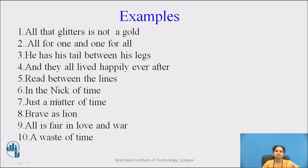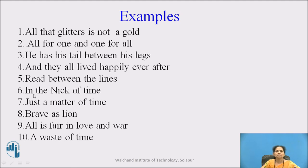Here are some examples of glitches: 'All that glitters is not gold.' 'All for one and one for all.' 'He has his tail between his legs.' 'And they all lived happily ever after.' 'Read between the lines.' 'In the nick of time.' 'Just a matter of time.' 'Brave as a lion.' 'All is fair in love and war.' And 'a waste of time.' All these glitches we use in our day-to-day communication.